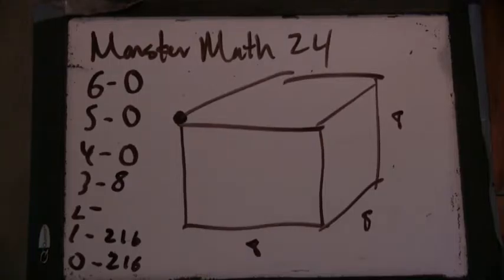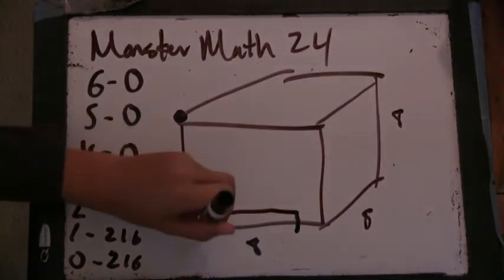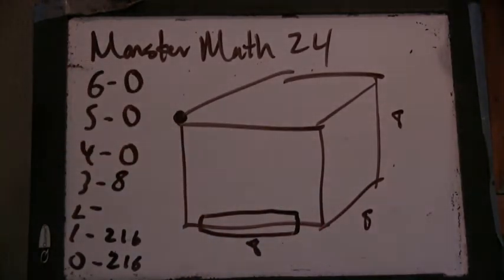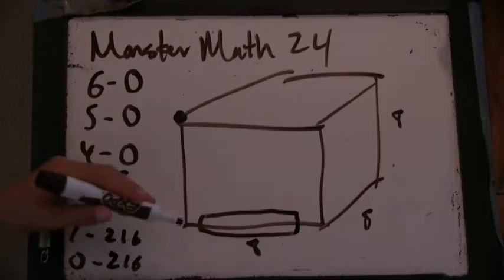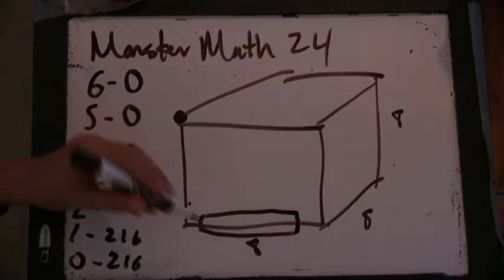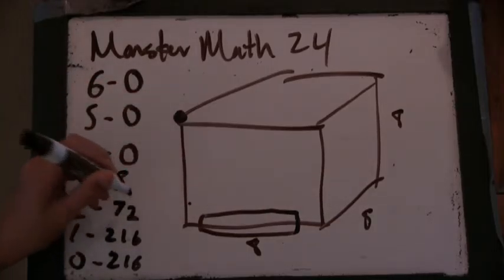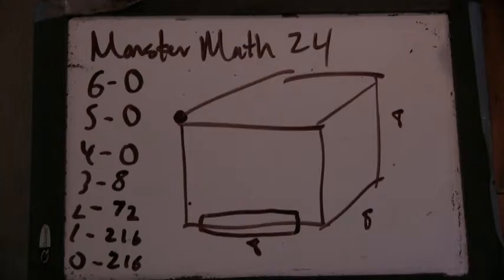Um, 2. That's the edges. So you'd have 6, 6 per edge, times 12 edges. So, 72. Okay.